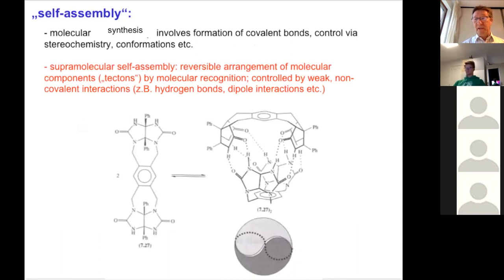Another important thing is self-assembly. In molecular synthesis, we make covalent bonds. In supramolecular synthesis, we use supramolecular components that interact, that recognize each other through weak interaction. So self-assembly is a tool that we can use from supramolecular chemistry.